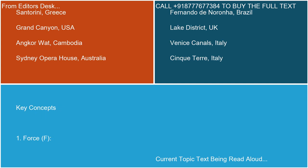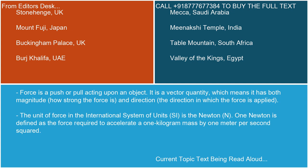Key Concept 1: Force (F). Force is a push or pull acting upon an object. It is a vector quantity, which means it has both magnitude — how strong the force is — and direction — the direction in which the force is applied. The unit of force in the International System of Units (SI) is the Newton (N). One Newton is defined as the force required to accelerate a one kilogram mass by one meter per second squared.